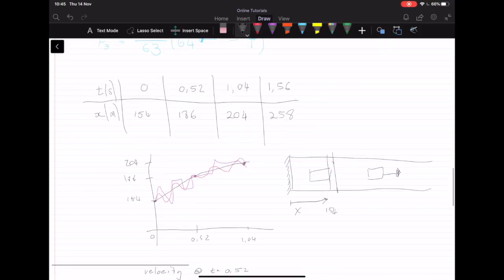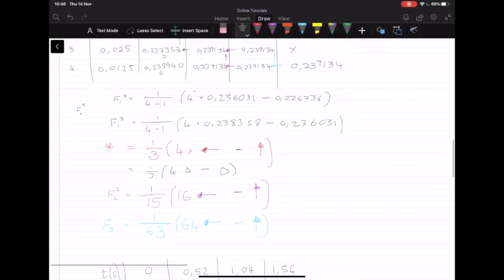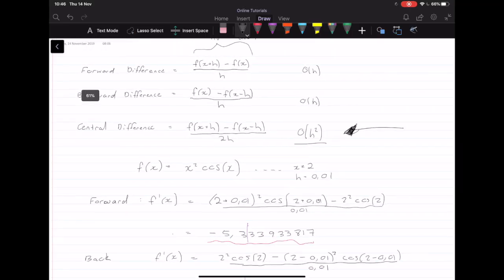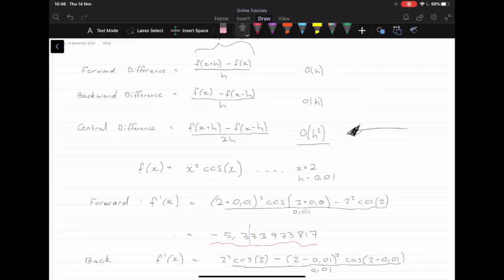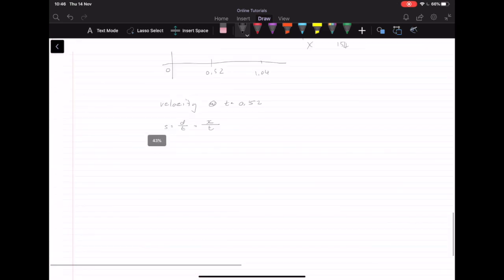But we don't want to just simply take the x value 186 over 0.52 because that's probably not going to give us the correct value. So we'd rather use a numerical method, and we are going to use the central difference because it will give us the order 2 accuracy, which we want.